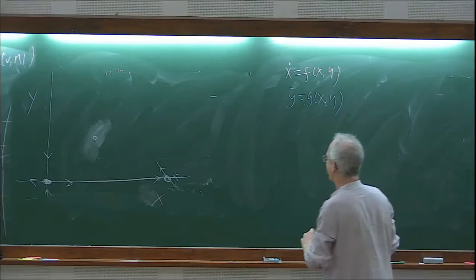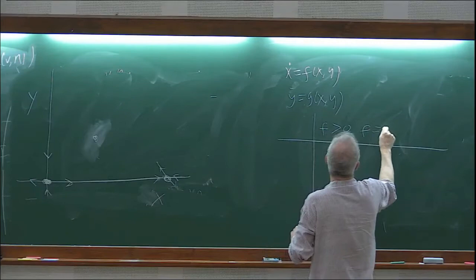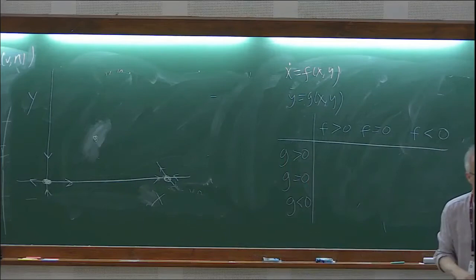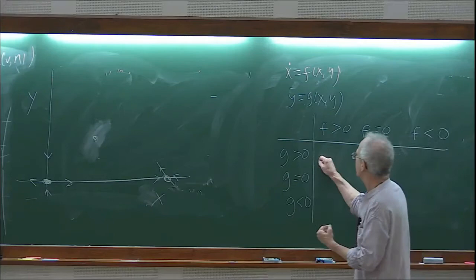If we can figure out the sign of f and g, we'll know what direction things are going. I'm going to write a picture: f greater than 0, f equals 0, f less than 0; g greater than 0, g equals 0, g less than 0. If g and f are both positive, that means x is increasing and y is increasing — so the arrow points northeast.